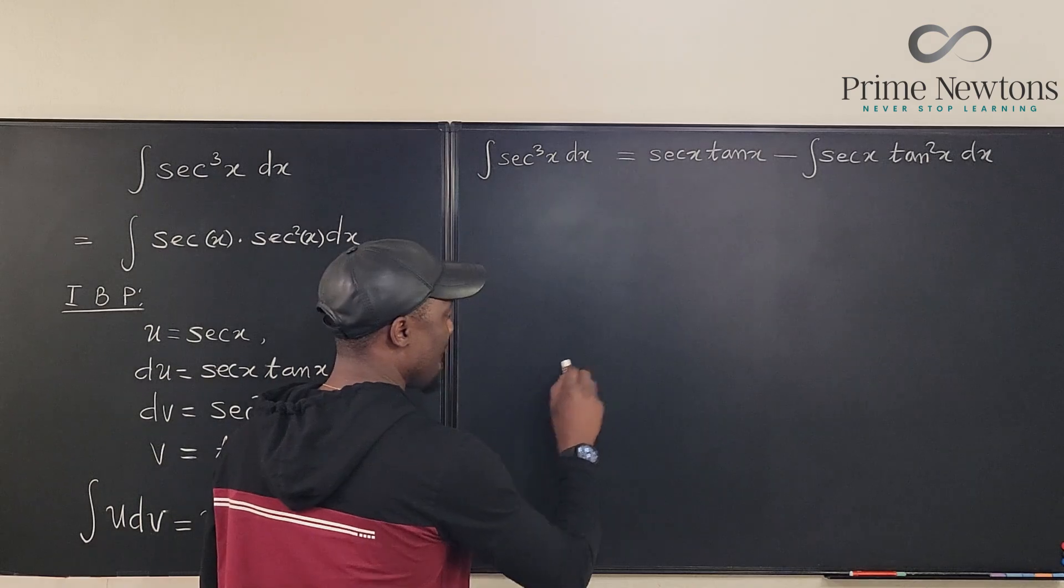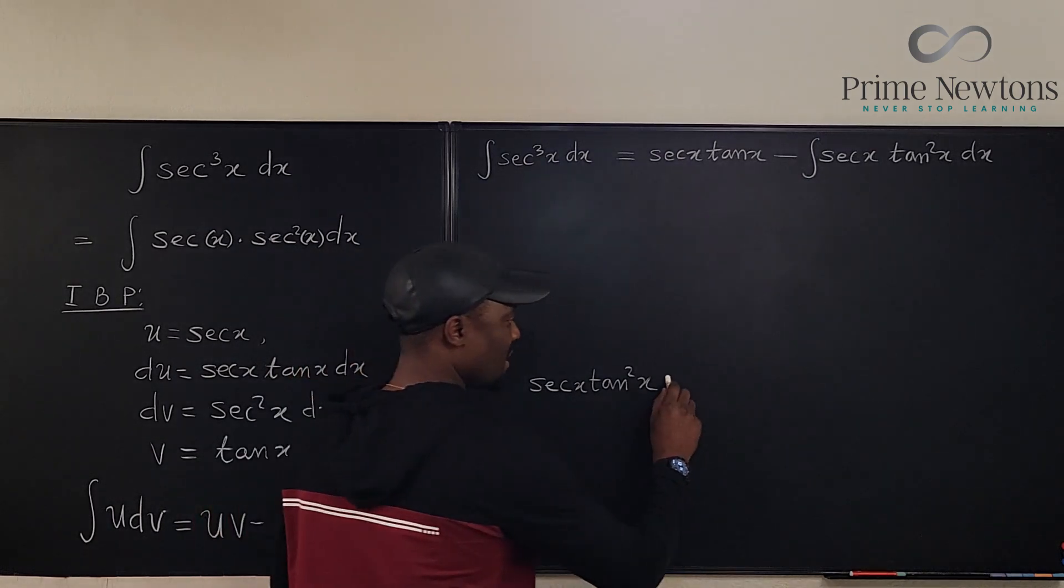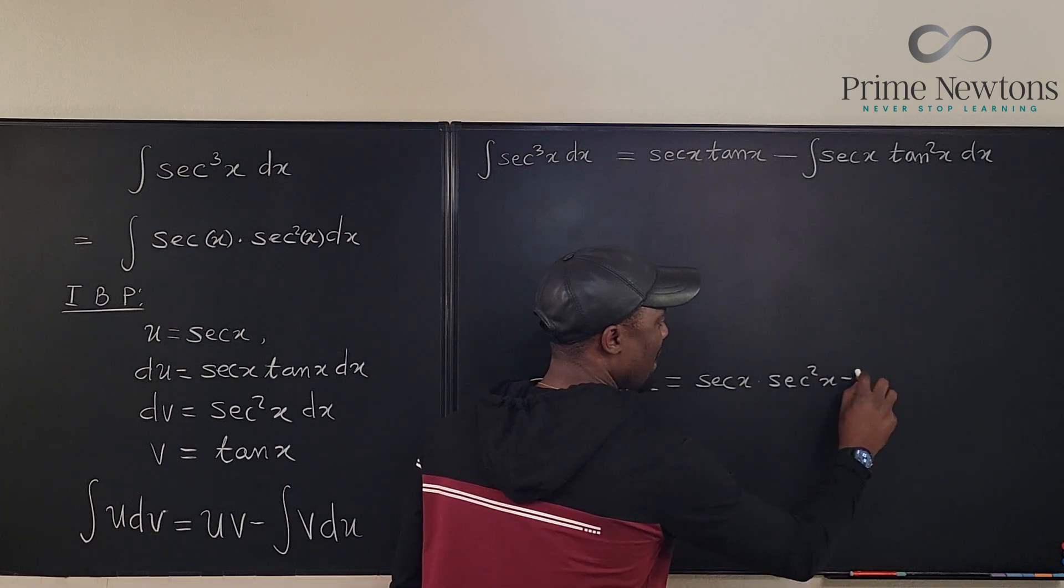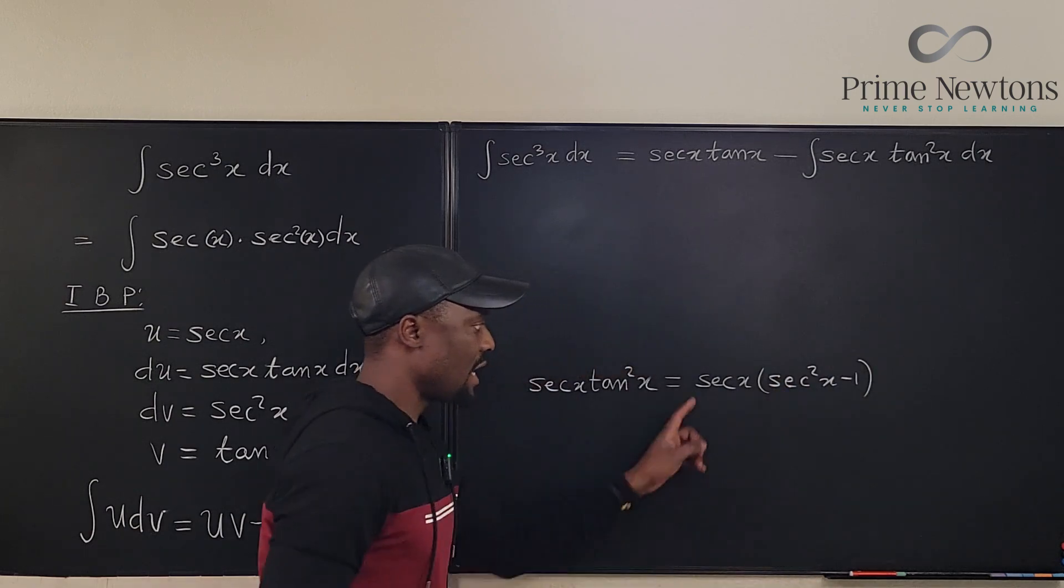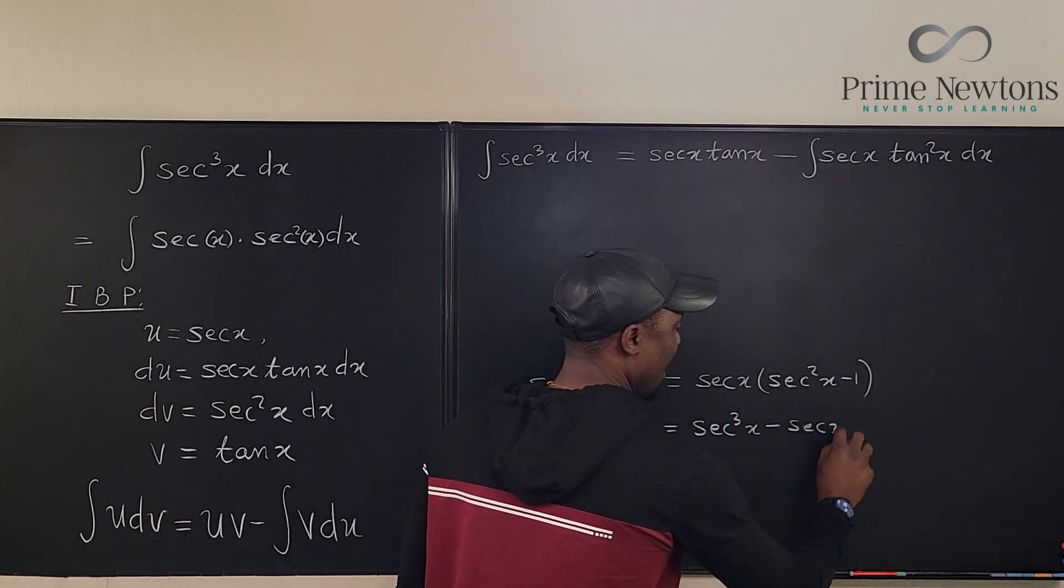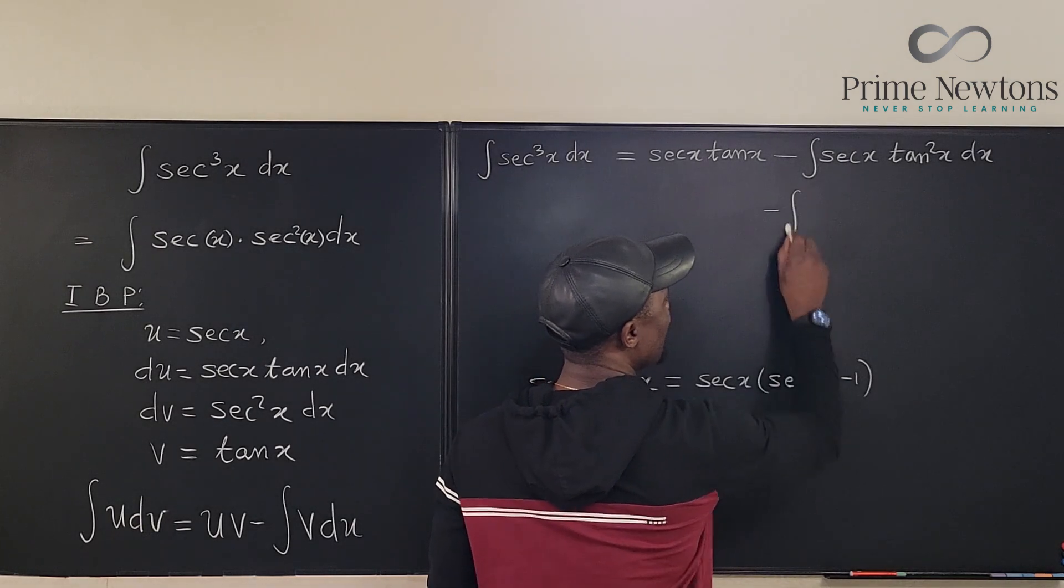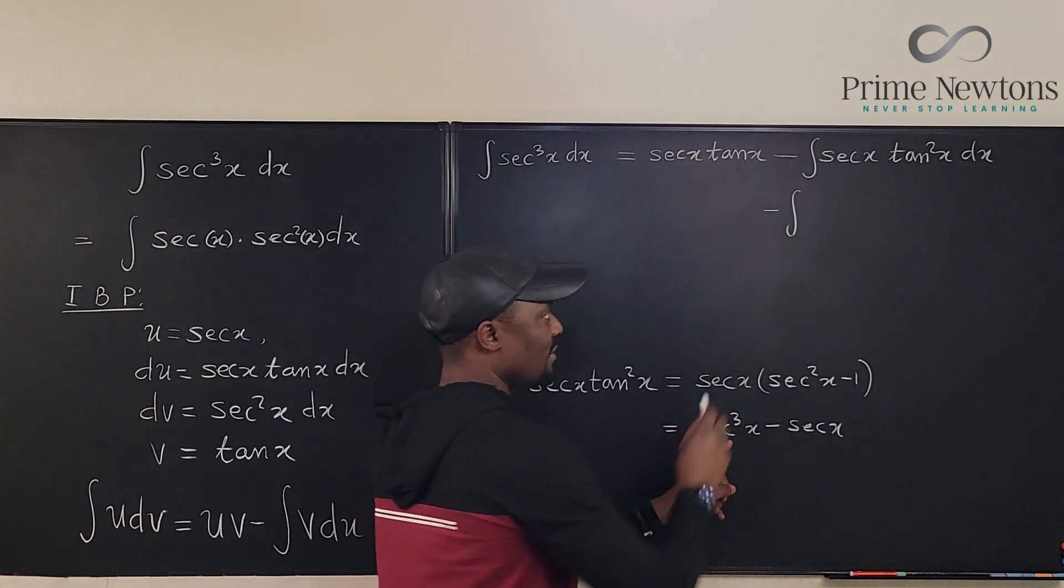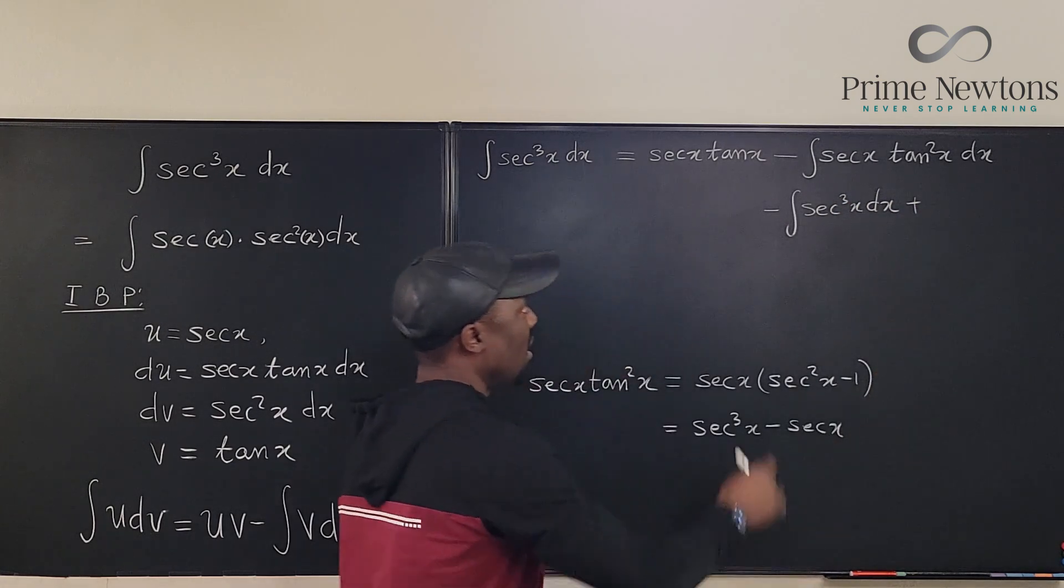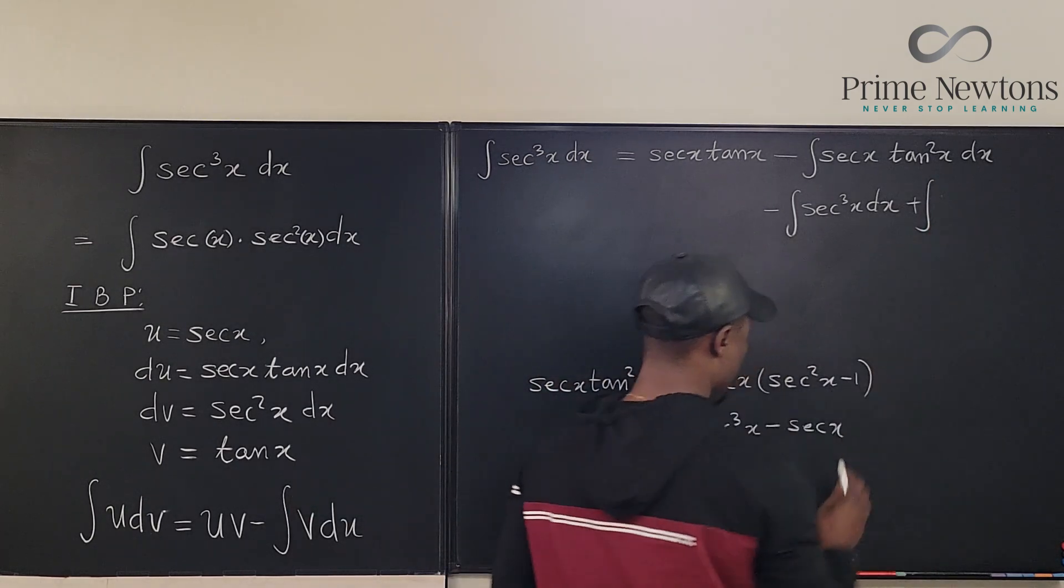So we know that secant x tan squared x can be written as secant x times secant squared x minus 1. And if you distribute this, you end up with secant cubed x minus secant x. So instead of writing this, we can actually go here and say minus the integral of secant cubed x dx. But this will become a plus. This minus is going to change this to a plus. And we have the integral of secant x.